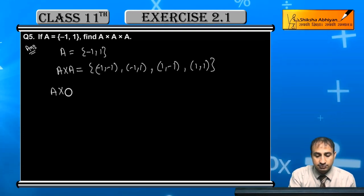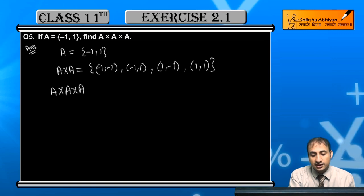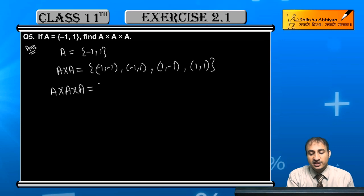This is A cross A cross A. Minus 1 ka in sub ke saath me hum karenge. This will become minus 1 comma minus 1 minus 1.